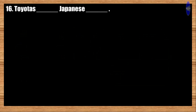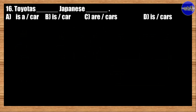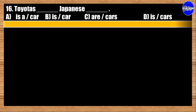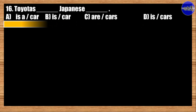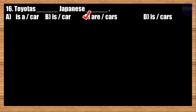Number sixteen: Toyota's blank Japanese blank. A: is, a car; B: is, car; C: are, cars; D: is, cars. The correct answer is option C. Toyota's are Japanese cars.